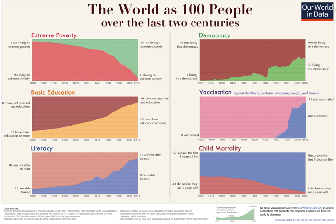Our World in Data is an online publication that presents empirical research and data on global change, in particular global living conditions. The publication's founder is the social historian and development economist Max Roser. The research team is based at the University of Oxford.